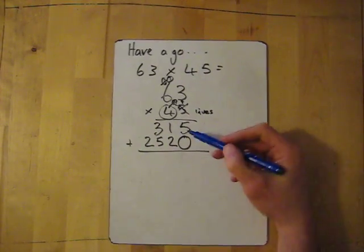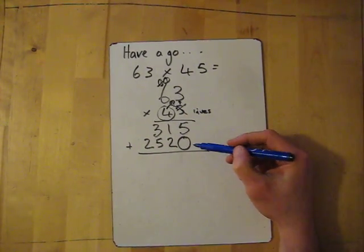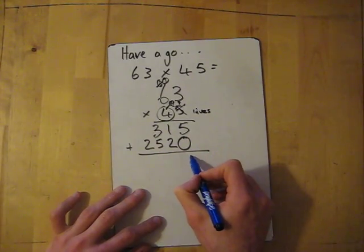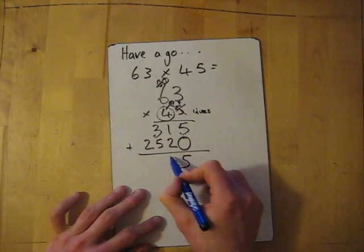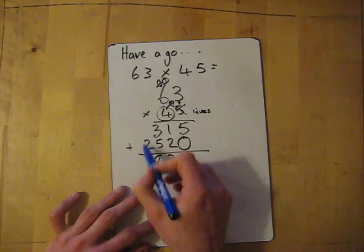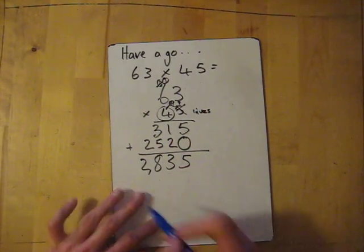And then we need to add life one answers and then life two answers together, and that will give us total answers. So five plus zero is five. Two plus one is three. Eight, five plus three is eight. And then two plus nothing is two. So it's 2,835. Done.